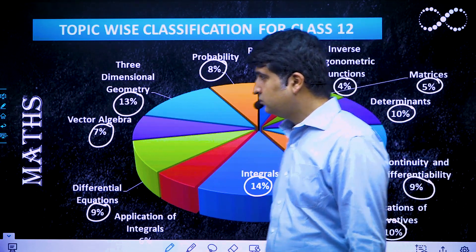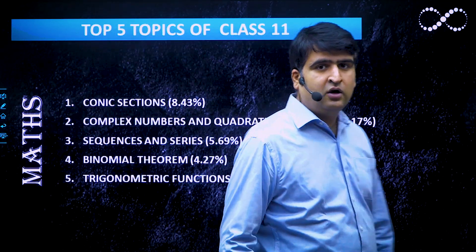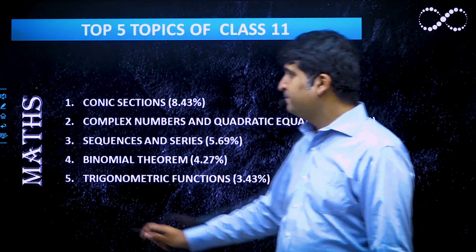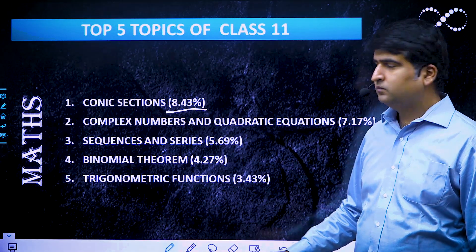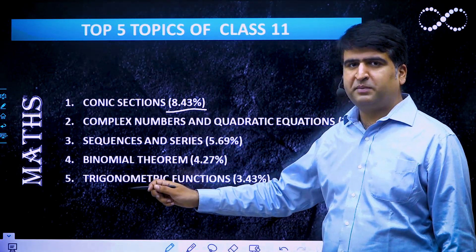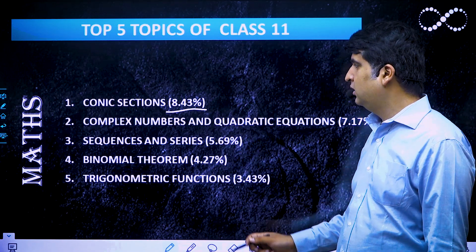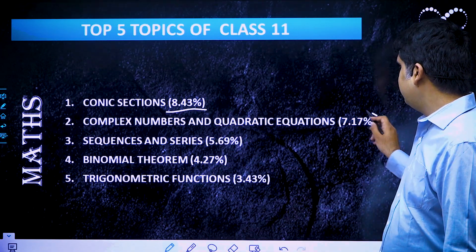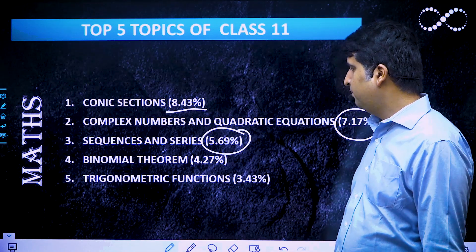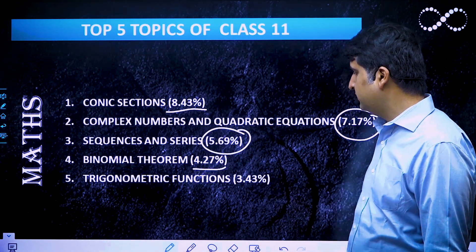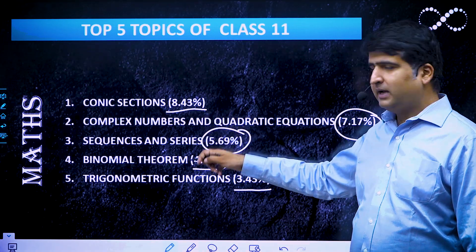The top 5 topics for Class 11, as a percentage of the total combined syllabus: Conic Sections at 8.43%, Complex Numbers and Quadratic Equations at 7.17%, Sequences and Series at 5.69%, Binomial Theorem at 4.27%, and Trigonometric Functions at 3.43%.